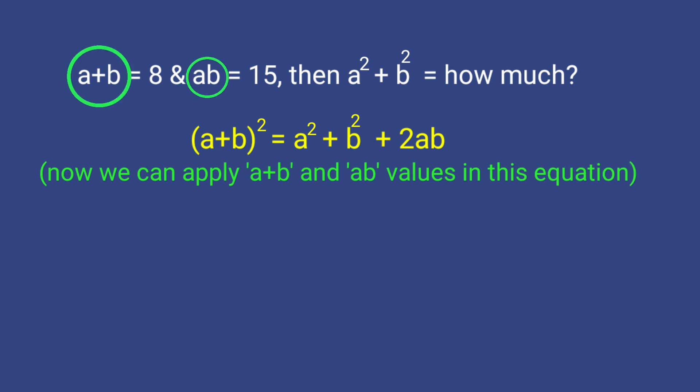Now we can apply A plus B and AB values in this equation. So 8 square is equal to A square plus B square plus 2 into 15. So 64 is equal to A square plus B square plus 30.